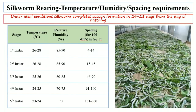Next are the temperature, humidity, and space requirements for the rearing of silkworms. Under ideal conditions, silkworms spin cocoons within 24 to 28 days after hatching. During the rearing period, requirements vary according to instar stages. During the first instar, the temperature requirement is 26 to 28 degrees centigrade with 85 to 90 percent relative humidity, and the space requirement for 100 disease-free layings is 4 to 14 square feet.